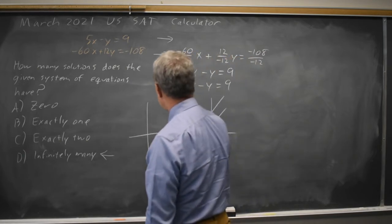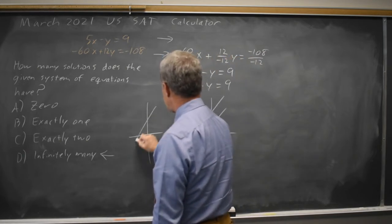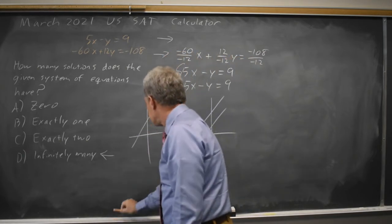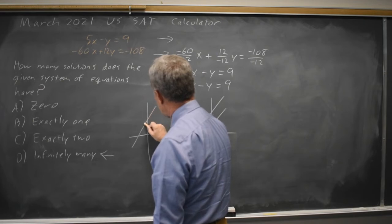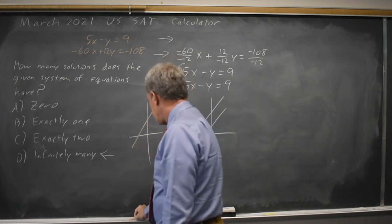Same slope, same intercepts, they're the same line. And so every point on one is on the other. They're all solutions.